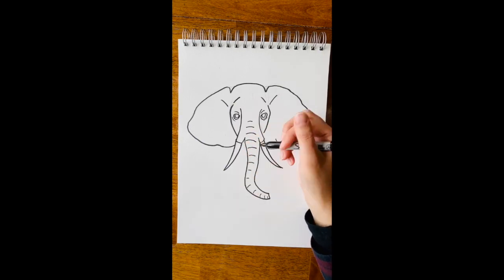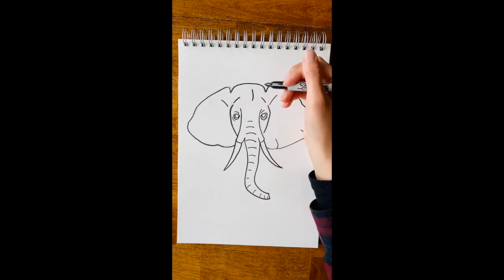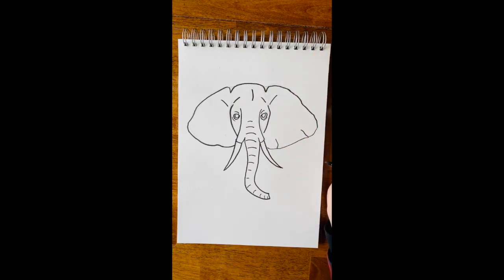There we go. So we have our outline of our elephant. Go to the next video to watch how we're going to apply some color and some mixed media elements to it. Good work.